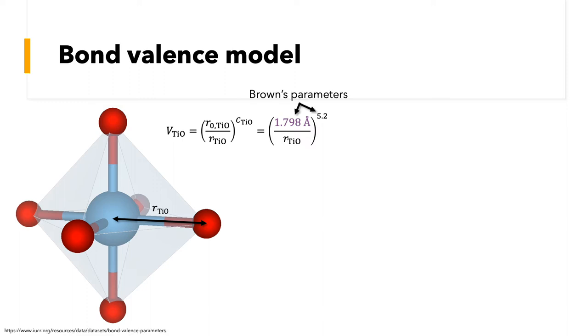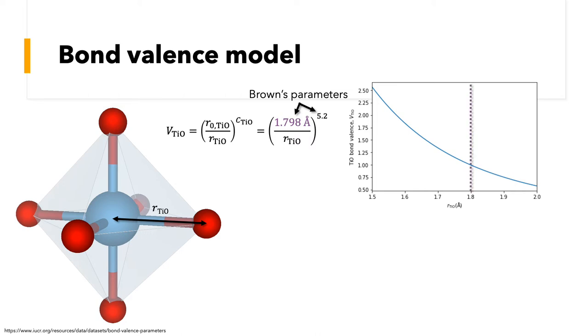be expressed mathematically as some TiO bond length parameter, R sub 0 TiO, divided by the instantaneous TiO bond length, raised to some parameter, C sub TiO, which determines how sharply the TiO bond valence decreases with increases in the instantaneous bond length. You can see this graphically here on the right, where the TiO bond valence for an arbitrary instantaneous bond length is the blue curve. When the bond length is equal to the bond length parameter, the TiO bond valence is exactly equal to one. However, in the case of BTO, the TiO bond length is approximately two angstroms, which gives a bond valence of 0.6 for the TiO bond in BTO.